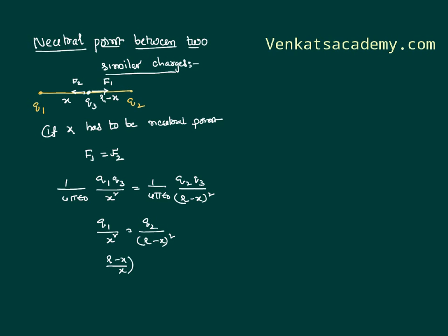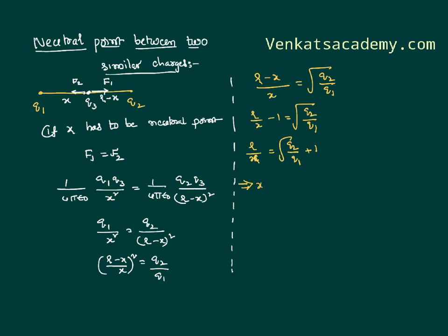Rearranging the terms, r minus x by x whole square equal to Q2 by Q1. We can further simplify this equation as r minus x by x is equal to square root of Q2 by Q1. R by x minus 1 is equal to square root of Q2 by Q1. That implies the location of the neutral point between the charges, x is equal to r by root of Q2 by Q1 plus 1.